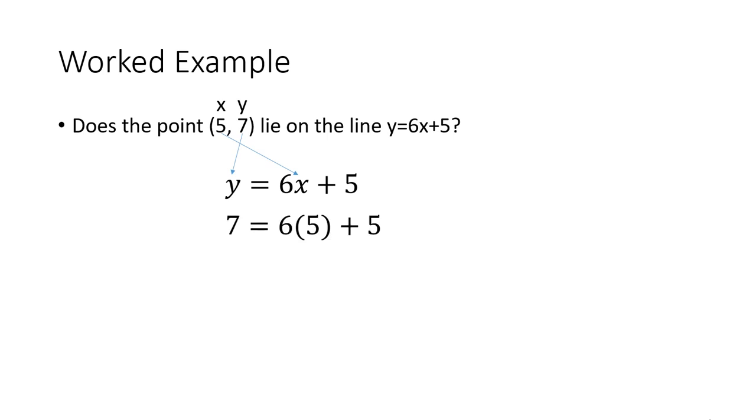So we then do the substitution. So 6(5) just means 6 times 5. So we're saying 7 = 6(5) + 5. Well, no, it doesn't. 7 is not equal to 40.